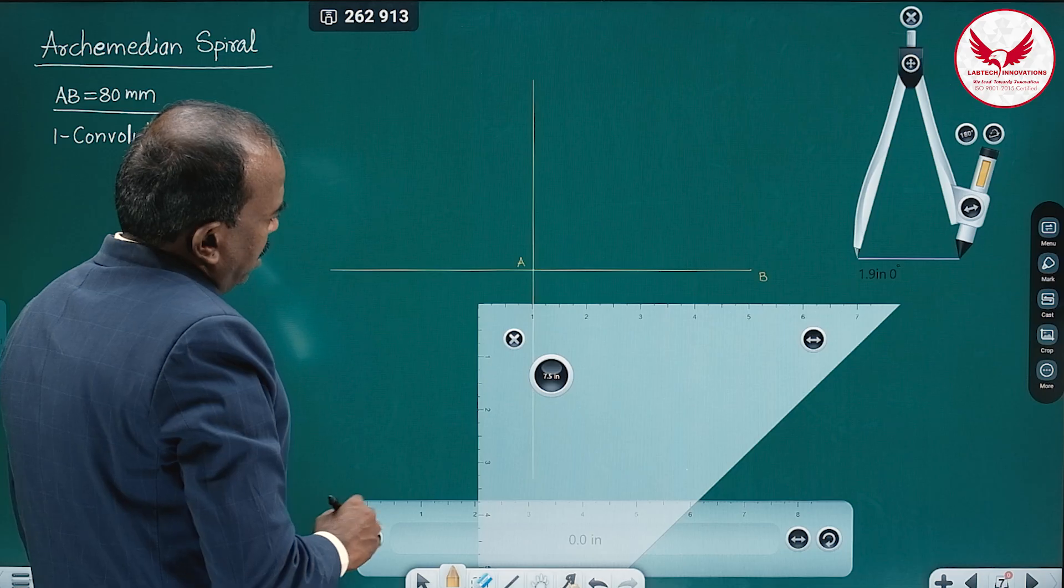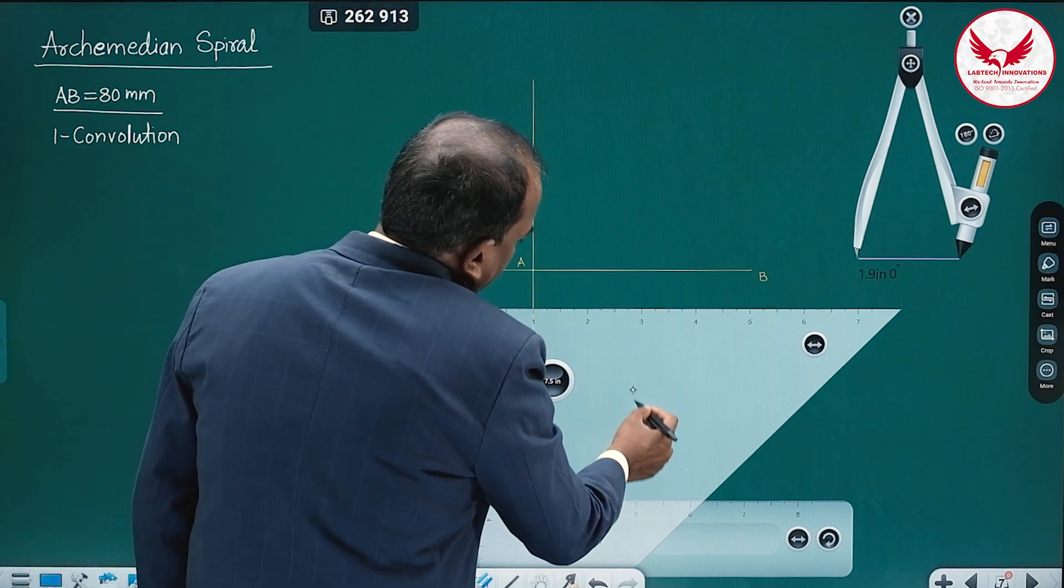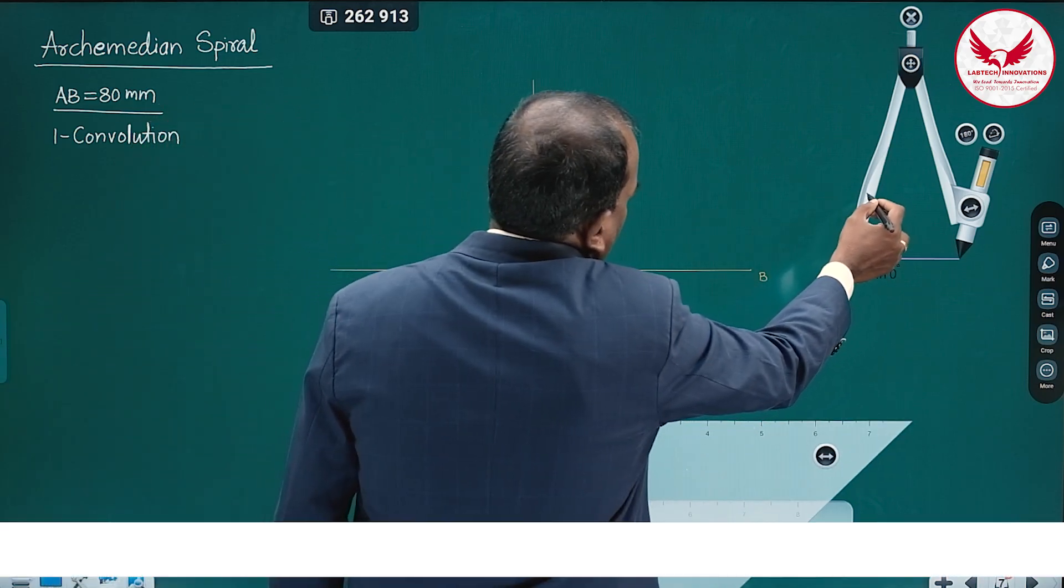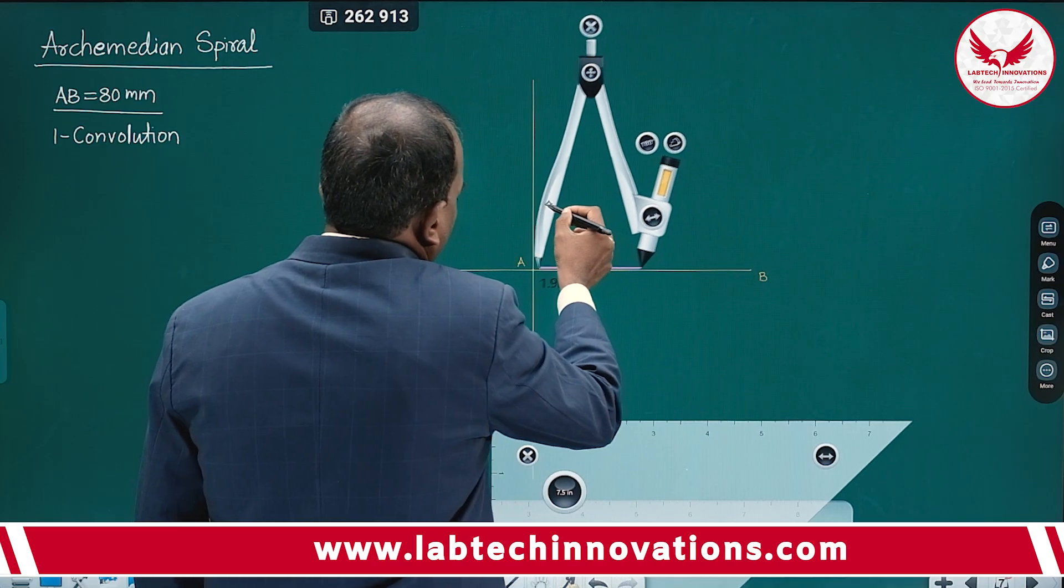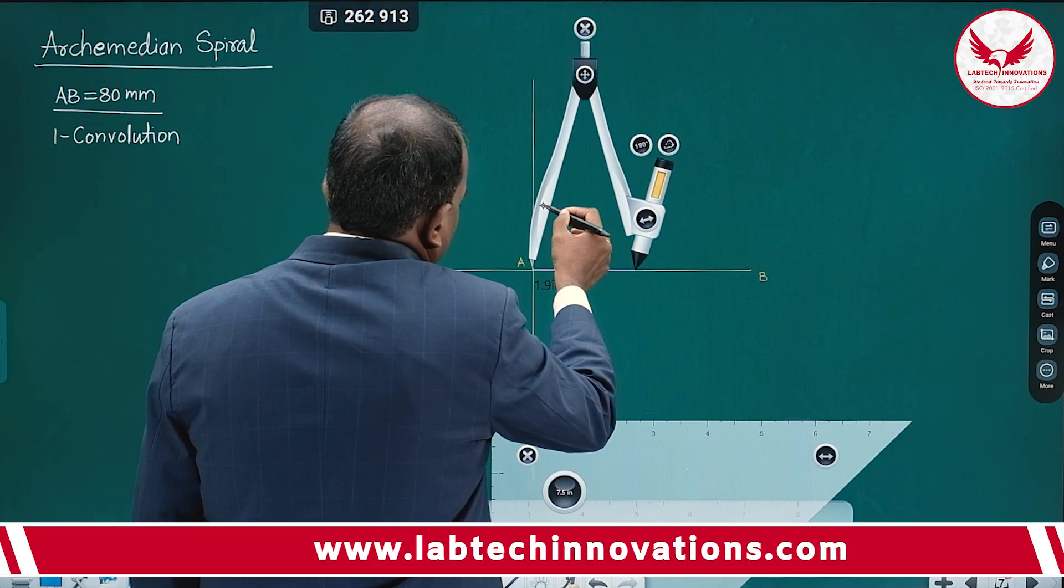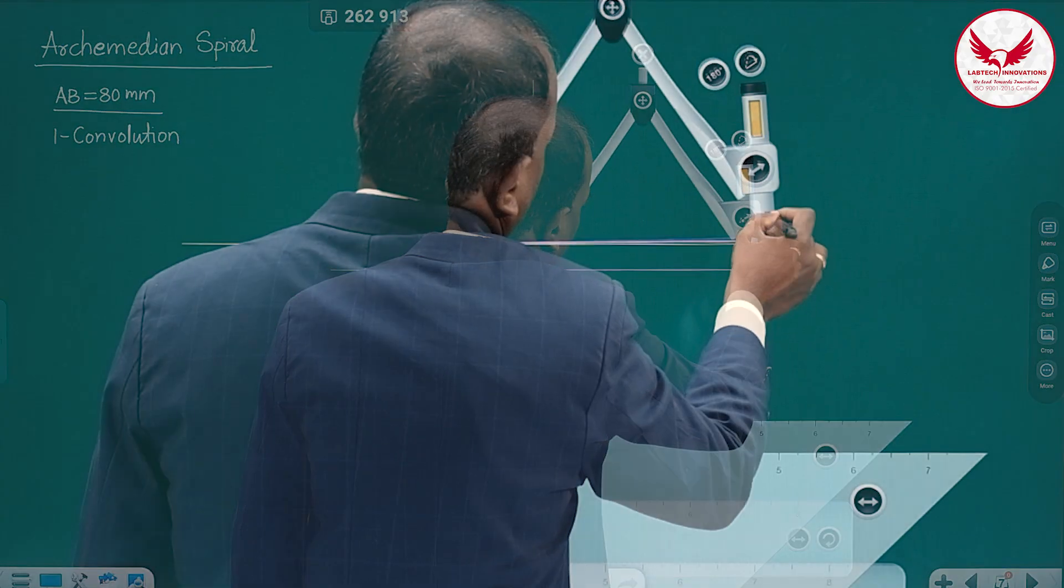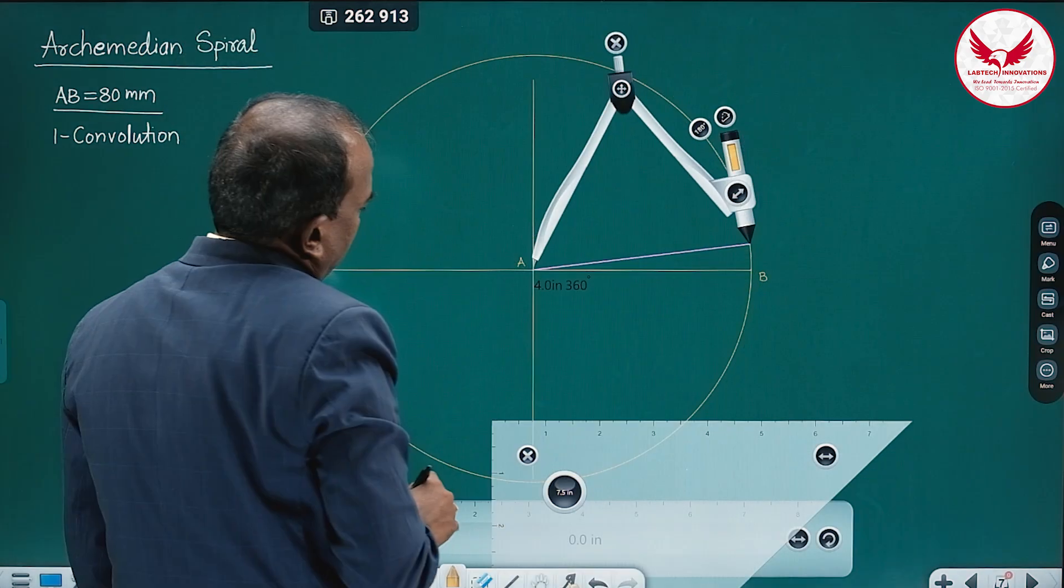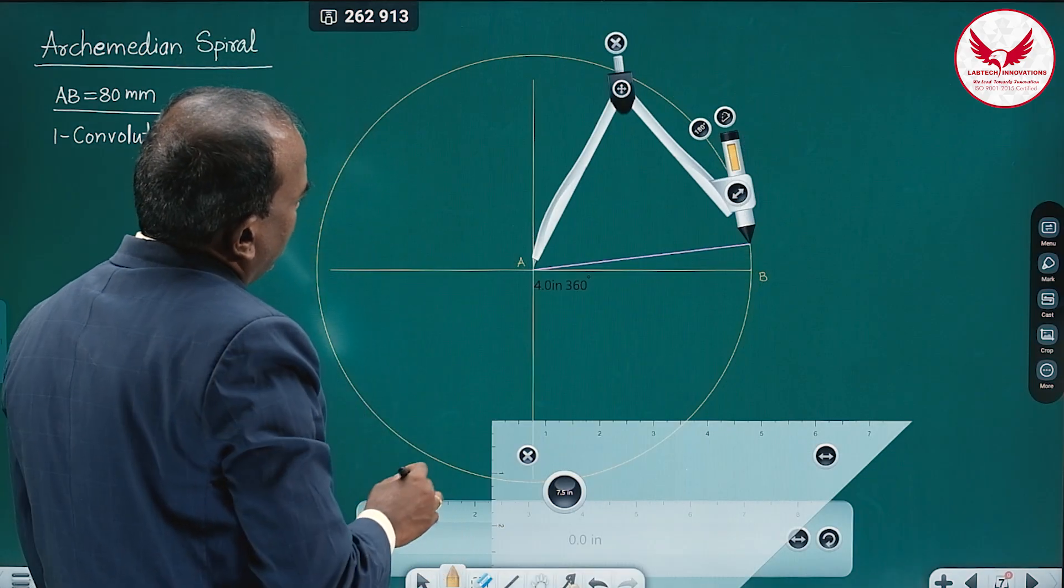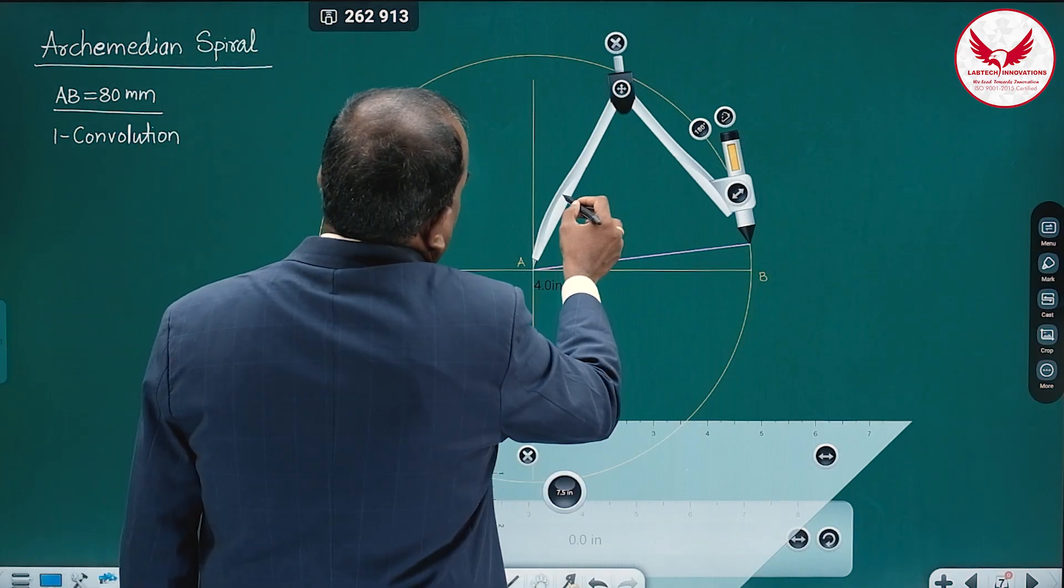And with AB as radius, we can draw the circle. So if this point is fixed, then we get the circle. If point is fixed, we always get circle.